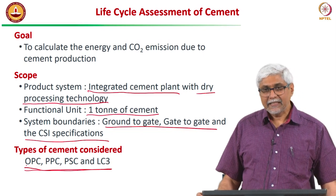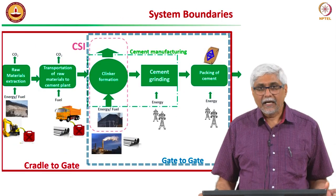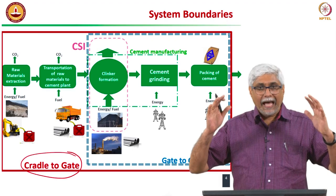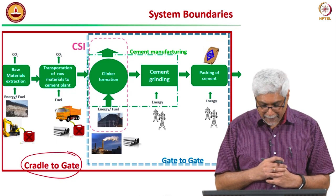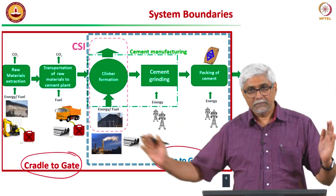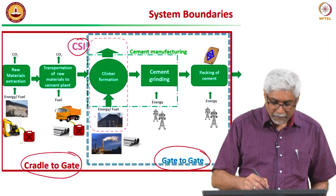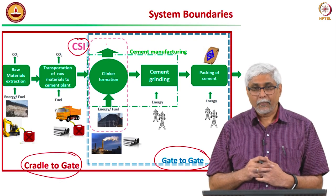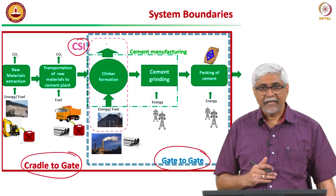We are going to look at this from the point of view of sustainability and do life cycle assessment. This diagram from the previous lecture shows the difference between cradle to gate — all processes attributable to cement production — gate to gate, what happens within the plant, and the CSI system which looks mainly at clinker formation, considered the most important process in cement manufacture. These are the three different system boundaries considered in this analysis.